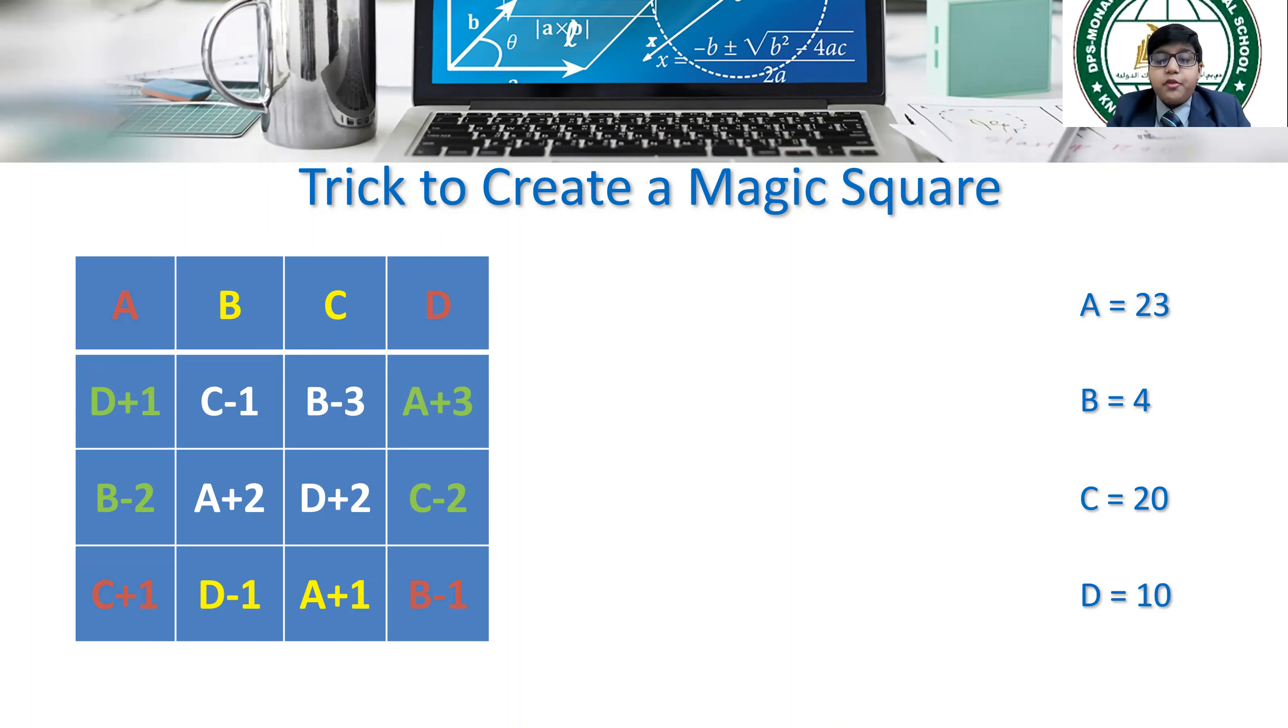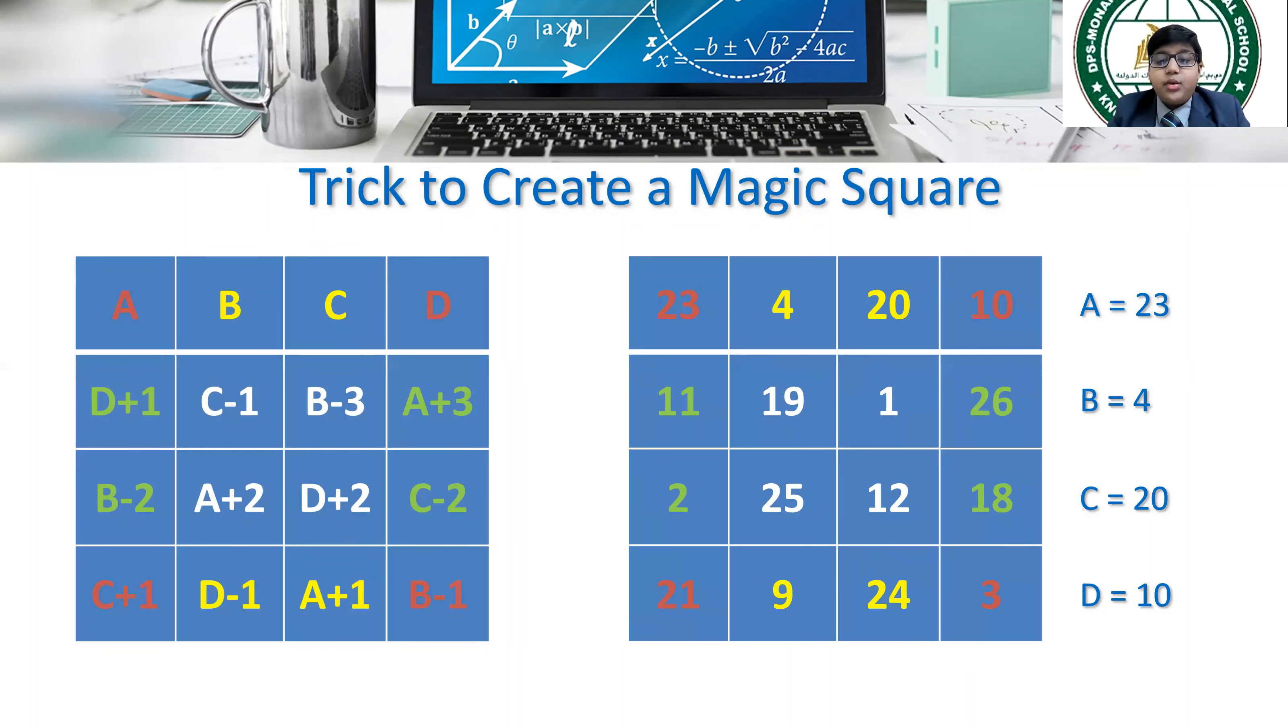Now, to fill all other places, use the formula mentioned in the table and your magic square is ready. You can check that the sums done in similar way to that of Ramanujan square will yield the same answer of 57.